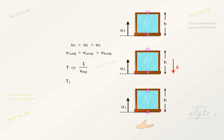So time taken will be maximum to cross the topmost window, followed by the middle window, and will be least for the bottommost window.